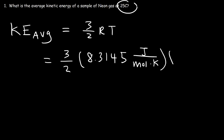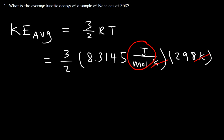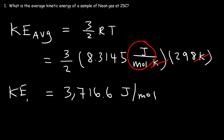The temperature needs to be in Kelvin, not in Celsius, as you can see based on the units. So we add 273 to 25, which gives 298 Kelvin. Therefore the average kinetic energy will have units of joules per mole. Multiplying 3 times 8.3145 times 298 divided by 2, you should get 3716.6 joules per mole — that is the average kinetic energy of this gas at 25 degrees Celsius.